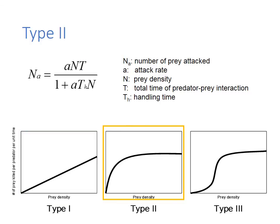In the Type 2 functional response, time spent searching for and handling prey is included. The ratio of total time to handling time becomes important. Note that handling time doesn't change. At low prey densities, a greater proportion of time is spent searching for prey, so few prey are consumed. At higher prey densities, a greater proportion of time is spent handling prey, and more prey are consumed. At a certain point, all of the time is spent handling prey because prey abundance is so high. At this point, handling time limits the number of prey attacked and the response curve reaches an asymptote.